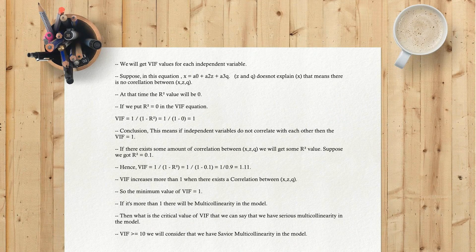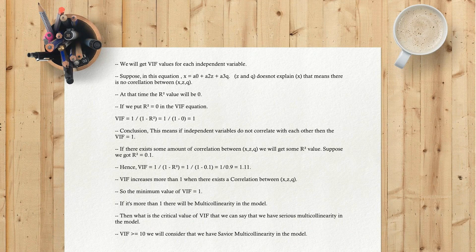We get VIF values for each independent variable. Suppose in the equation X equals A0 plus A2Z plus A3Q, Z and Q do not explain X — meaning there is no correlation between X, Z, and Q. At that time the R-squared value will be 0. Putting R-squared equals 0 into the VIF equation: VIF equals 1 divided by (1 minus 0) equals 1. This means if independent variables do not correlate with each other, VIF equals 1. If there exists some correlation and R-squared equals 0.1, then VIF equals 1 divided by (1 minus 0.1) equals 1 divided by 0.9, which equals approximately 1.11.